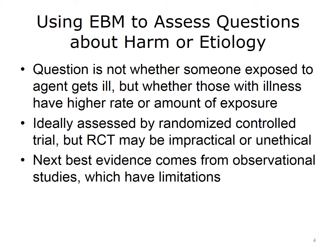Let's look at an example. Suppose we think that a certain chemical causes cancer. The ideal way to assess harm is to do a randomized controlled trial. So the best thing to do would be to get a group of people together and randomize half of them to getting exposed to the chemical and half of them not getting exposed. But obviously, exposing people to a chemical that might cause cancer is unethical, so we can't do that.